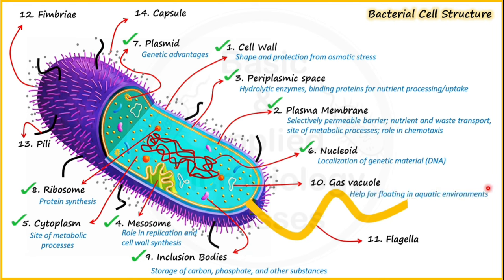Flagella is a filamentous structure that helps bacteria in movement — it is a locomotory organ. Bacteria that possess flagella are called motile bacteria, while those lacking flagella are called non-motile bacteria. Flagella contains three different parts: the filament, the hook, and the basal body.